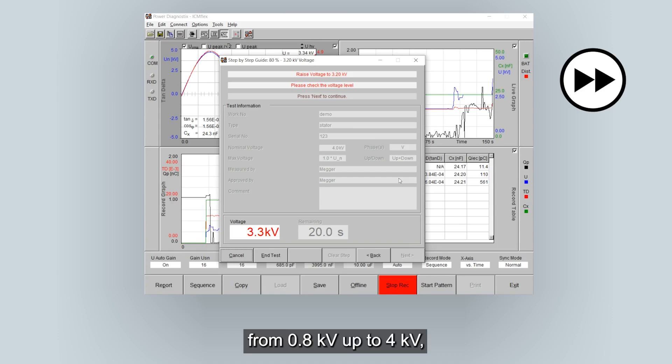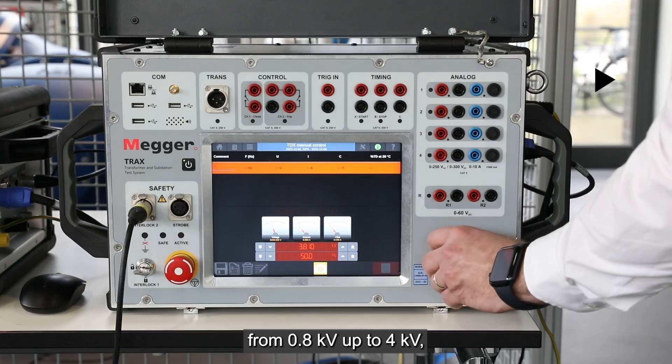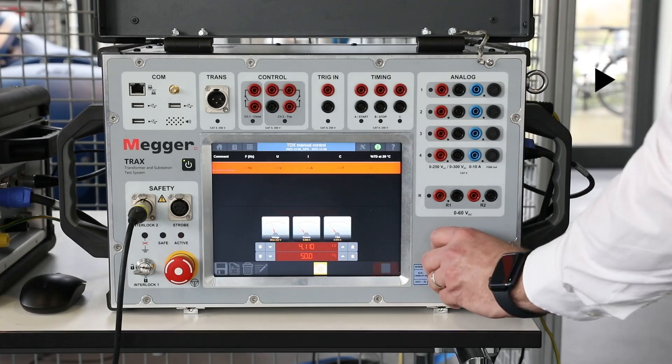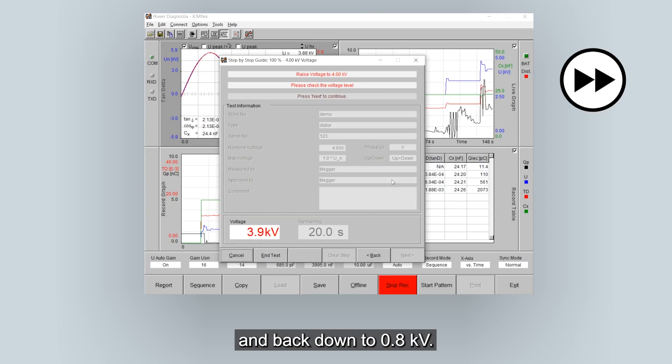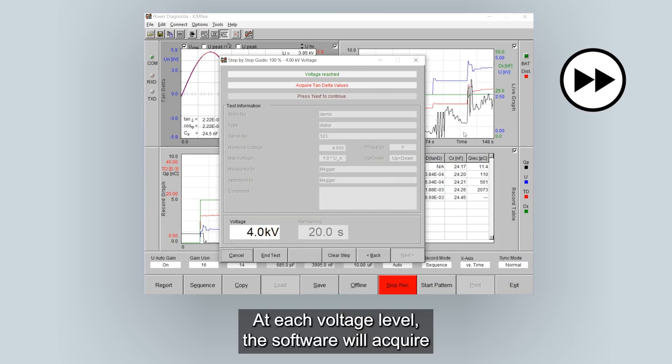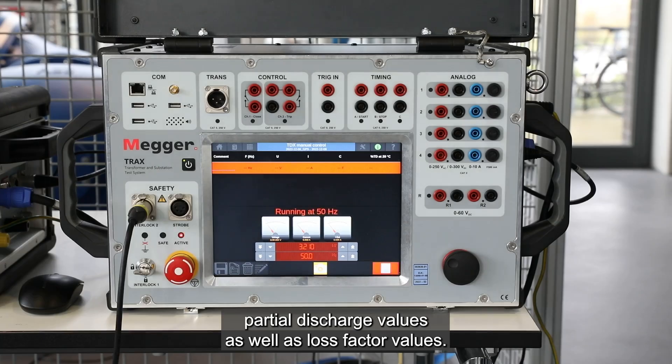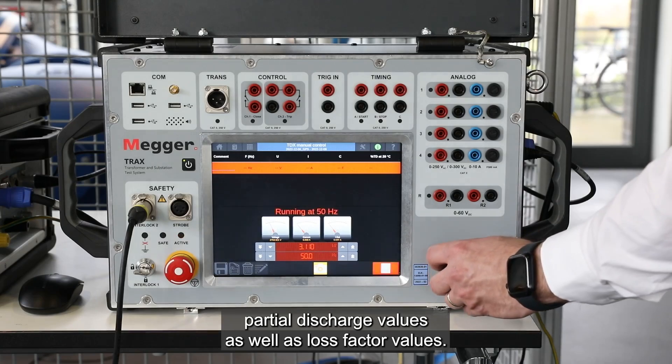The step-by-step guide will guide me through 5 different voltage steps with increments of 800 volts each. From 0.8 kV up to 4 kV and back down to 0.8 kV. At each voltage level, the software will acquire partial discharge values as well as loss factor values.